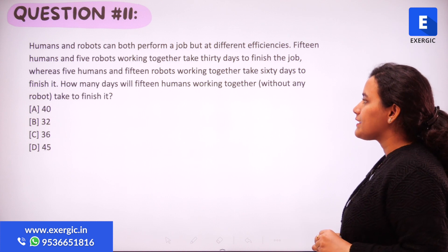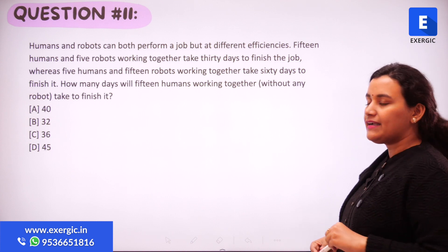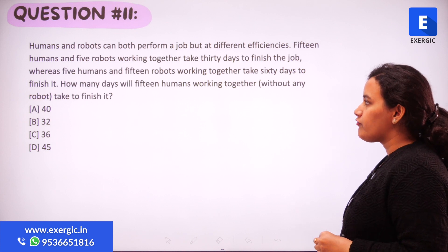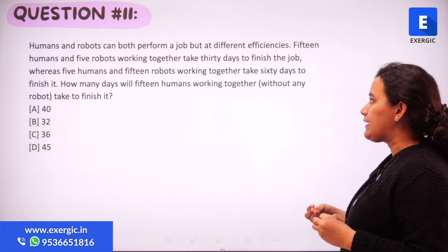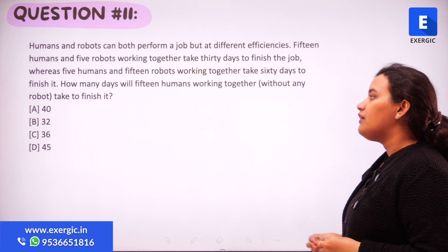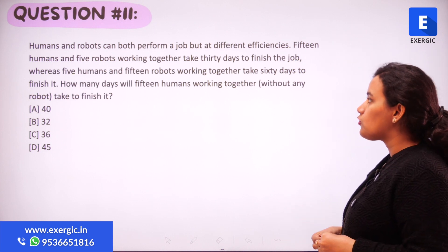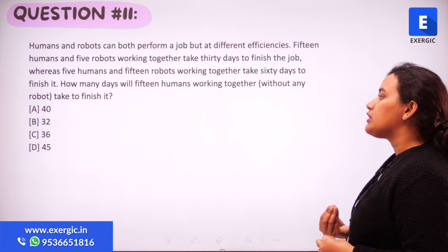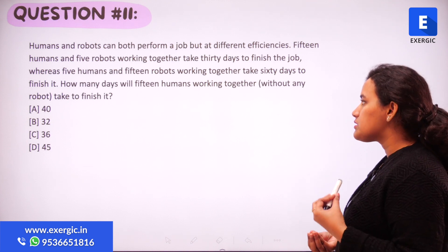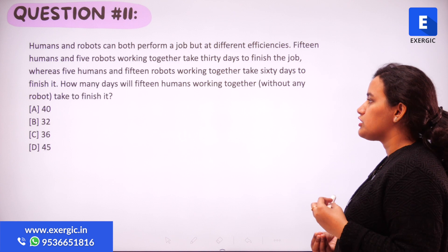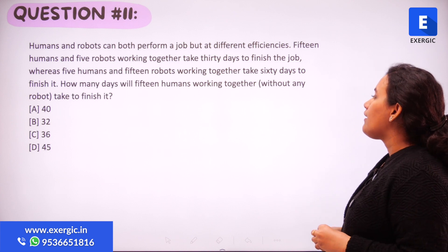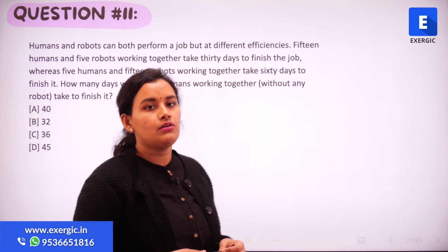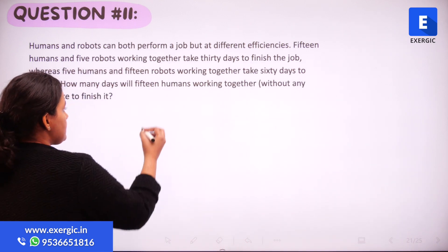Humans and robots can both perform a job but at different efficiencies. 15 humans and 5 robots working together take 30 days to finish a job, whereas 5 humans and 15 robots working together take 60 days to do the job.